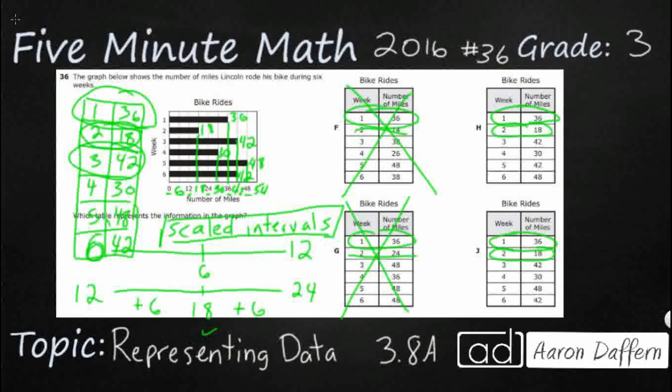Okay, so let's look at three and 42, three and 42, three and 42, yes, four and 30, four and 30, four and 30, five and 48, five and 42, five and 48, six and 42, our answer is J.